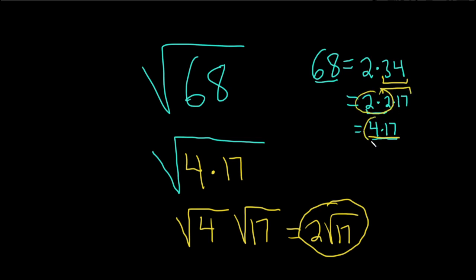And that gives you the 4. And that's what you want. You want a number that when you take the square root of that number, it's a whole number. That's how you know you're simplifying it correctly. And there's nothing you can do here with the 17. The square root of 17 is just the square root of 17.